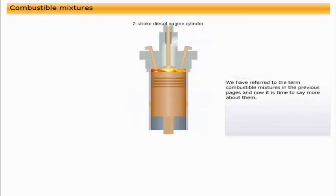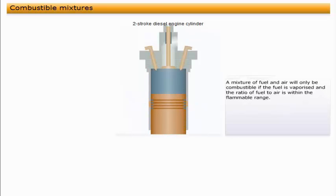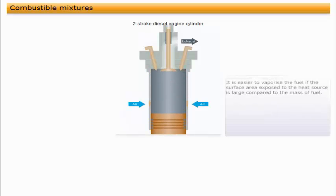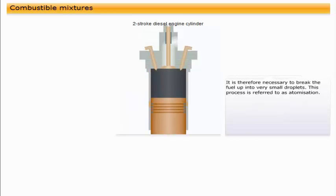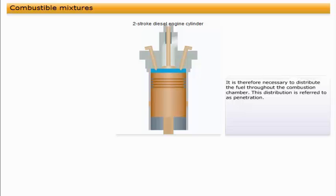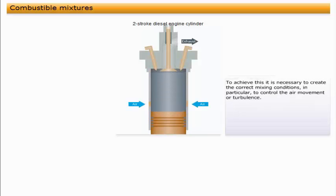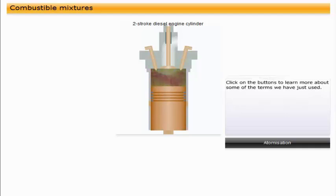We have referred to the term combustible mixtures in the previous pages, and now it is time to say more about them. A mixture of fuel and air will only be combustible if the fuel is vaporized, and the ratio of fuel to air is within the flammable range. It is easier to vaporize the fuel if the surface area exposed to the heat source is large compared to the mass of fuel. It is therefore necessary to break the fuel up into very small droplets. This process is referred to as atomization. In a diesel engine, it is desirable that the whole volume of the combustion chamber is used. It is therefore necessary to distribute the fuel throughout the combustion chamber. This distribution is referred to as penetration. The fuel and air must be mixed so that the fuel and oxygen are evenly distributed to ensure that combustion is as complete as possible. To achieve this, it is necessary to create the correct mixing conditions, in particular to control the air movement or turbulence.